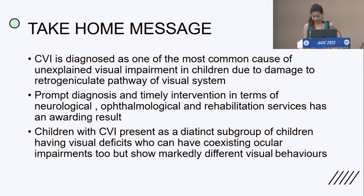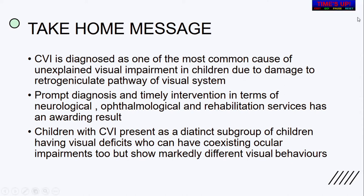Take-home message: CVI is one of the most common causes of unexplained visual impairment in children. It can be differentiated from visually impairment due to ocular disorders by studying the visual behavior of these children. Children with CVI present as a distinct subgroup with specific visual deficits and may have coexisting ocular disorders. Thank you.